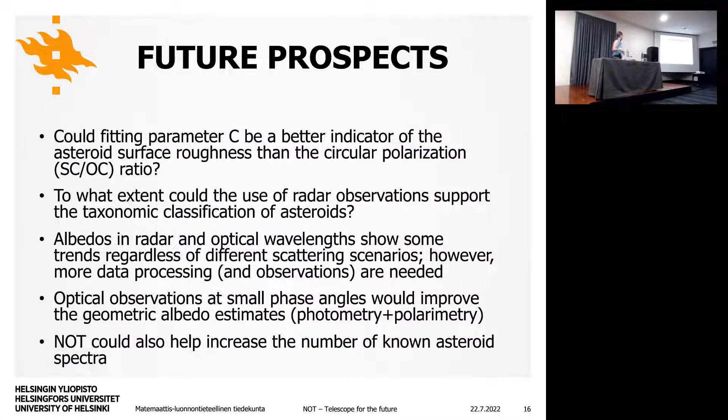The future prospects of the study, focusing on the last ones here. The optical observations at small phase angles are needed to improve, especially, the geometrical albedo estimates, which can be done either through photometry or polarimetry. And that could also help with increasing the number of known asteroid spectra, which is also important to make these kind of studies, these statistical properties. But the idea is that you need both of these radar and optical observations to then do this kind of holistic characterization. Okay, if anybody has questions. I'm running very low on time here.